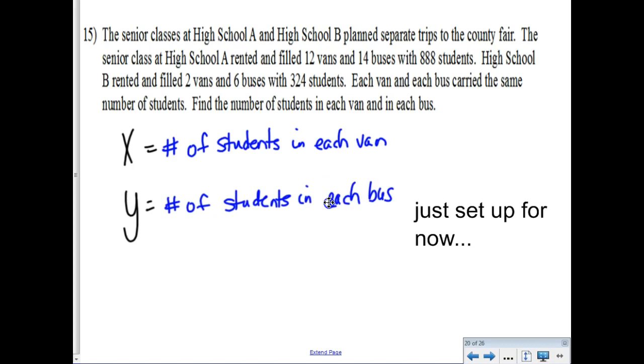So, your variables have to be clearly defined and very specific and, of course, accurate. So, now, using Matt's weird variables, thanks, Matt, we have to fill 12 vans, 14 buses for a total of 888 students for the first high school. So, 12 vans times the number of students in each van. So, that would look like 12x and then 14 buses times the number of students in each bus, and those numbers have to total up to 888. And, then, the other high school rented two vans, so two vans times the number of students in each van, plus six buses times the number of students in each bus, for a total of 324.